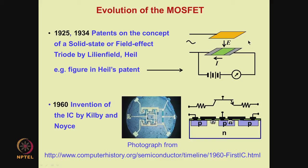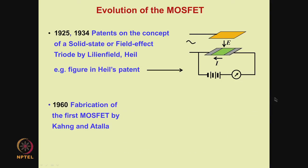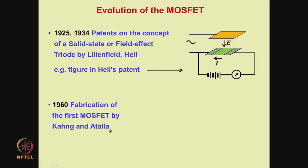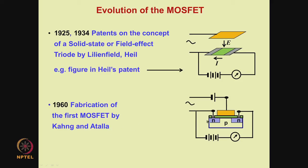After the invention of the integrated circuit, it was realized that the original idea of the field-effect triode — a device based on this idea — would be more suitable for use in integrated circuits than the bipolar junction transistor. Therefore, people reverted back to the field-effect triode. Because of the amount of knowledge gained about semiconductor surfaces while studying the bipolar junction transistor, a MOSFET could be realized very quickly by Kahng and Atalla, who fabricated the first MOSFET.